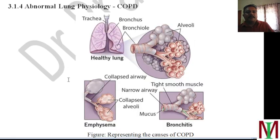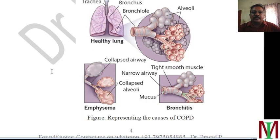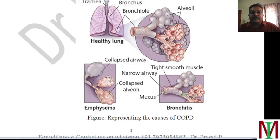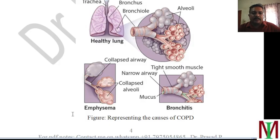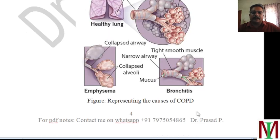Abnormal lung physiology is represented showing trachea, bronchia, and bronchioli. In a healthy lung the alveoli are very functional, whereas in some conditions there may be collapsed airways, blockages, alveoli collapsing or combining together, or mucus blockage inside the trachea or bronchioles. The airways may become narrow with tightened muscles — conditions we call emphysema or bronchitis — these are different terms for lung diseases or COPD.